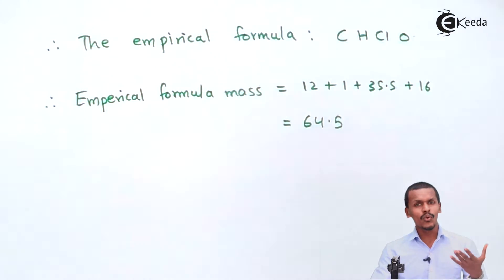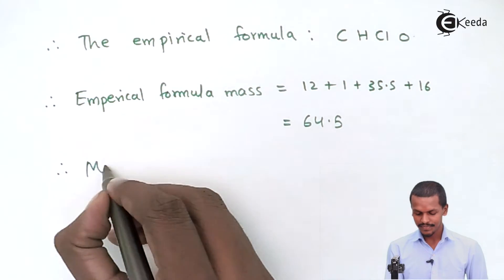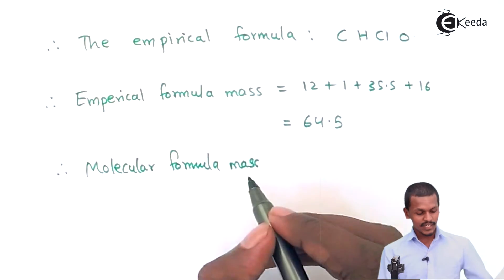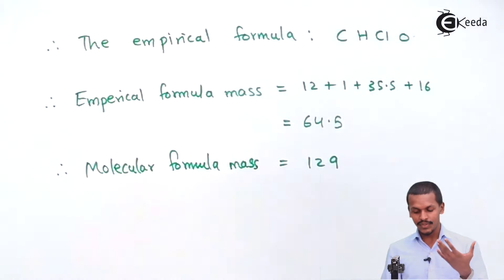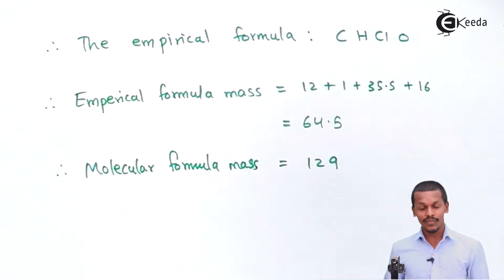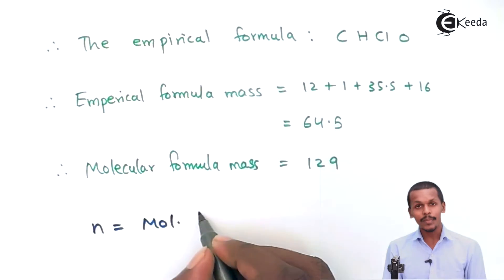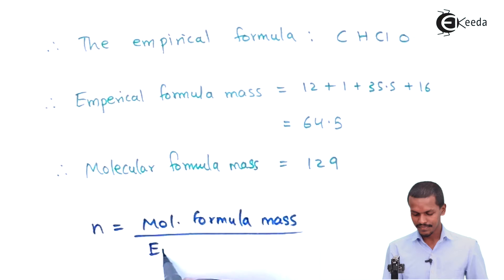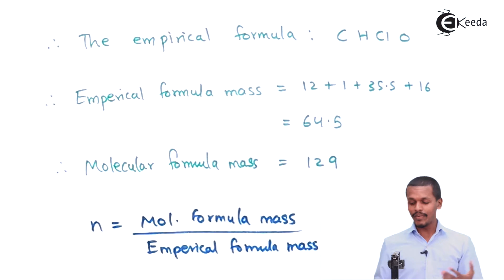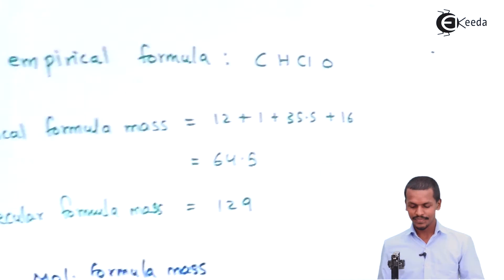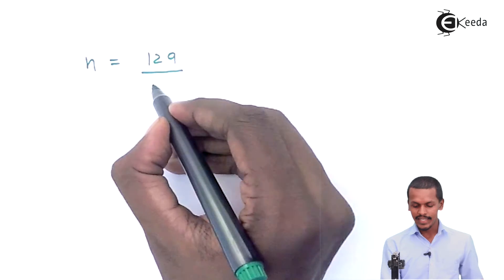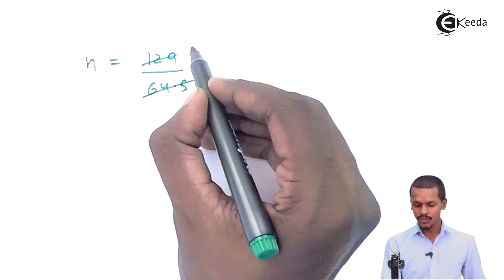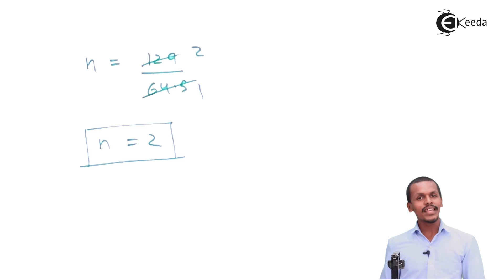We also know the molecular formula mass, which was given as 129. We calculate n using the formula: n = molecular formula mass ÷ empirical formula mass = 129 ÷ 64.5 = 2. Therefore, the value of n is 2.